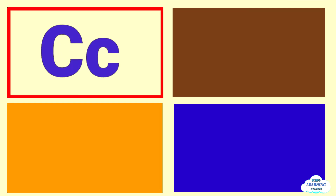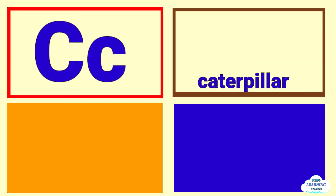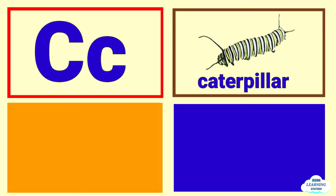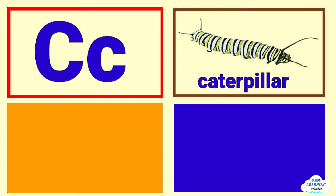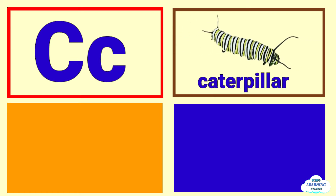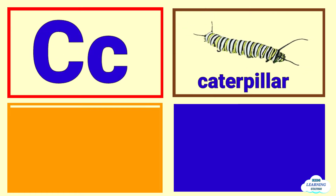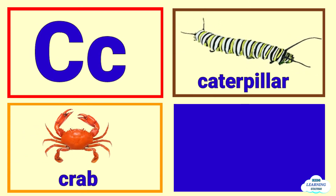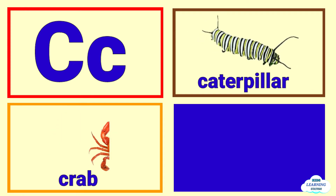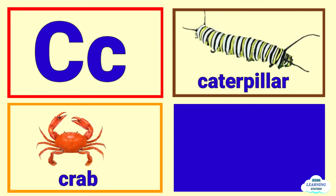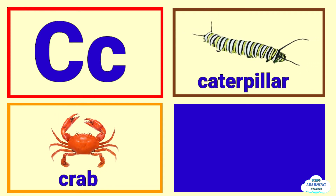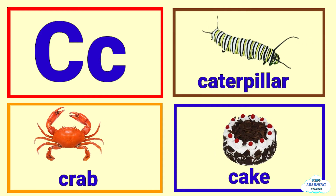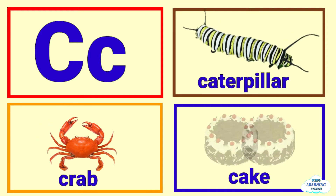C is for caterpillar, caterpillar. C is for crab, crab. C is for cake, cake.